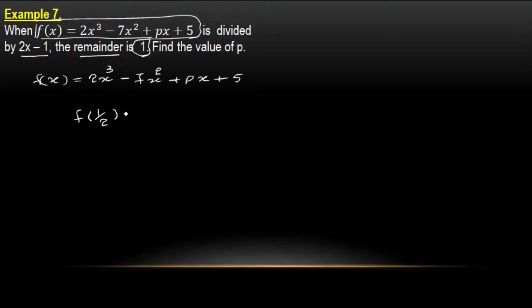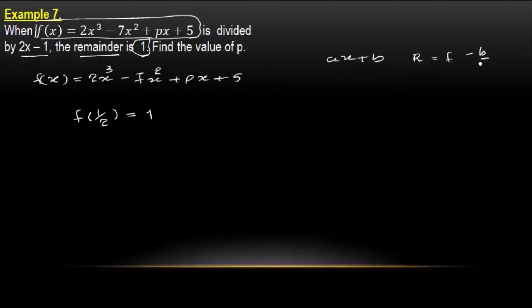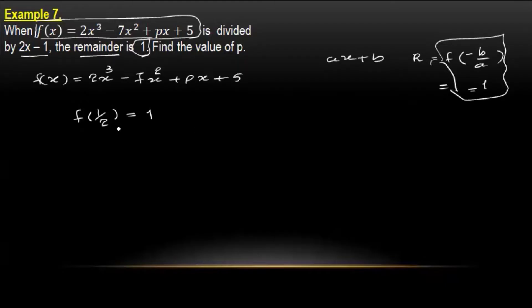This is equal to 2x minus 1 equals 0, so x minus 1 by 2. So 4x minus 3x minus 1 is equal to 1. So you can see the value of p is equal to 1.